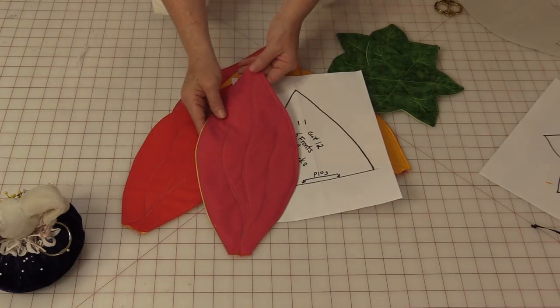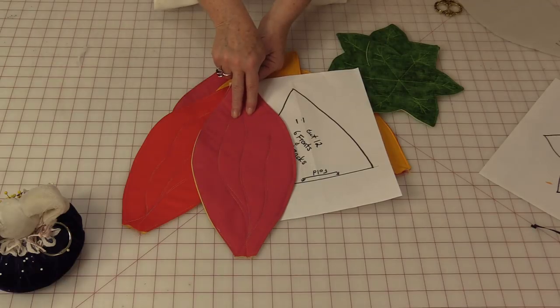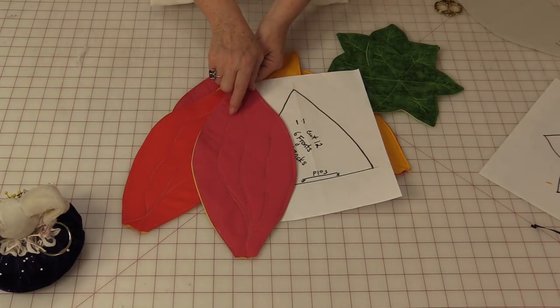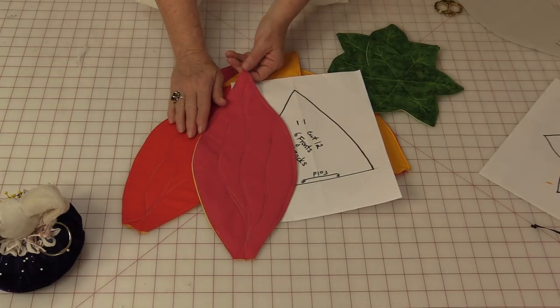And what you're going to want to do is do two up at the top of each leaf. And that is going to make this tea cozy reversible.